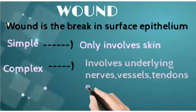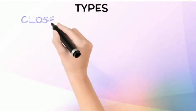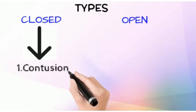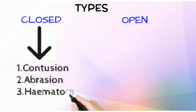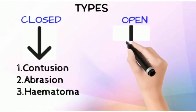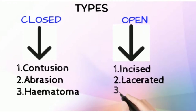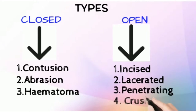The main two types of wound we are going to discuss in this chapter are closed wounds and open wounds. In closed wounds we have three types: contusion, abrasion, and hematoma. In open wounds we have incised wounds, lacerated, penetrating, and crushed wounds. I will discuss all these wounds in detail along with pictures so that it will be easy to recognize the types of wounds.